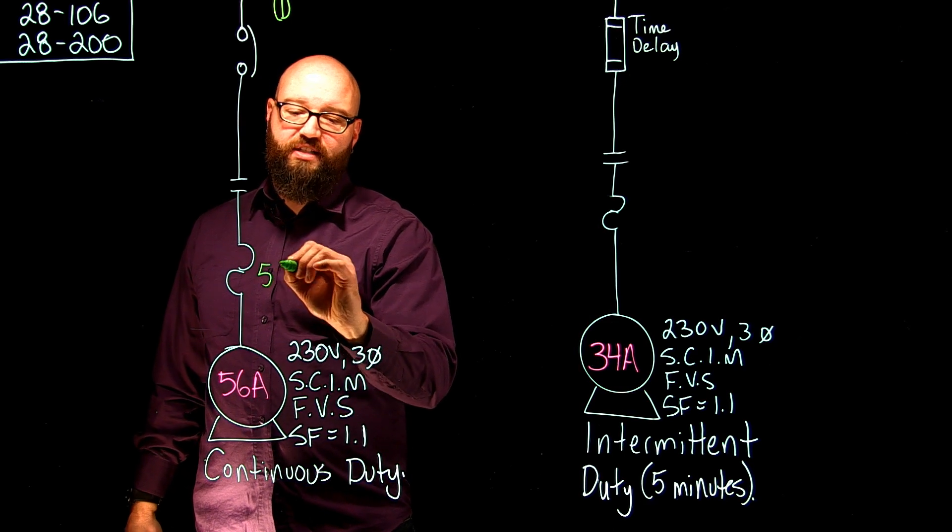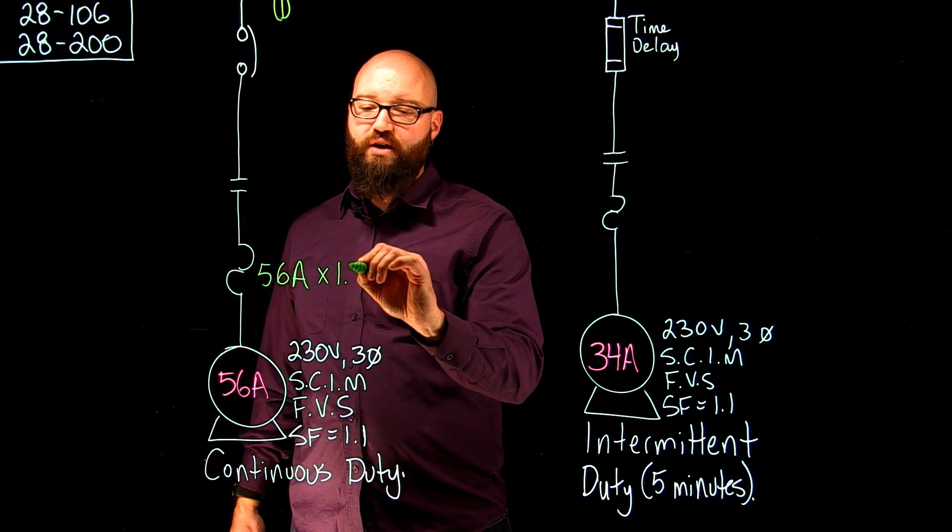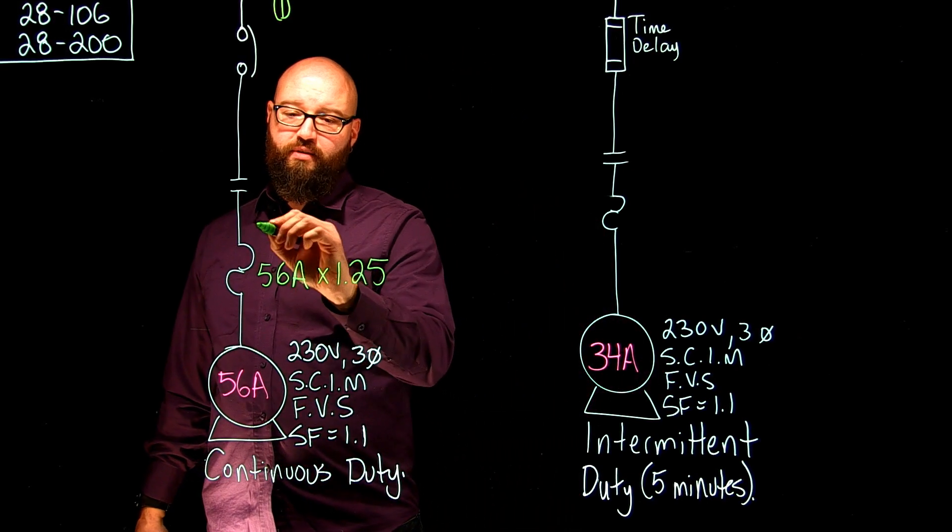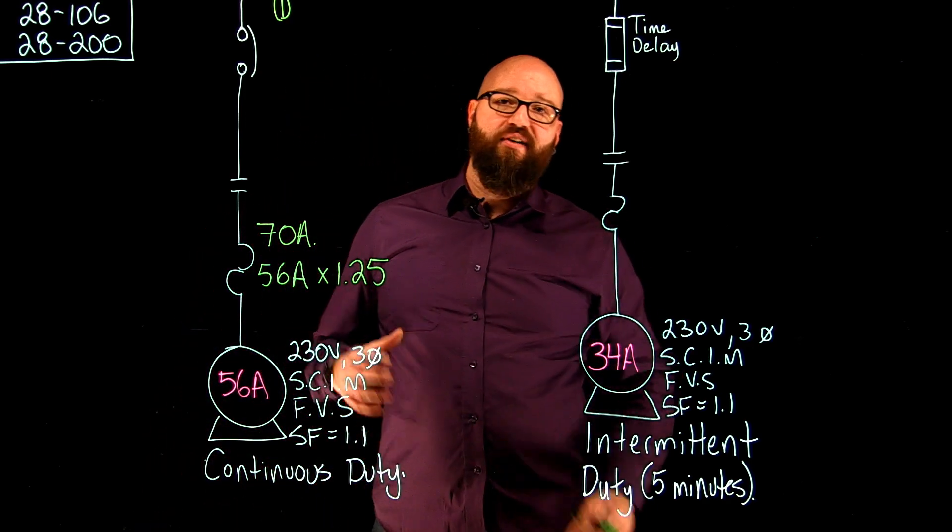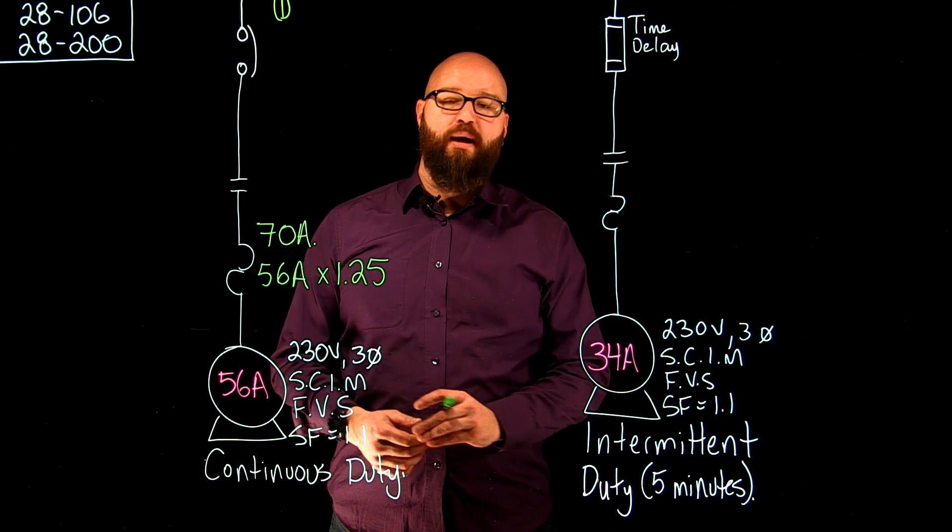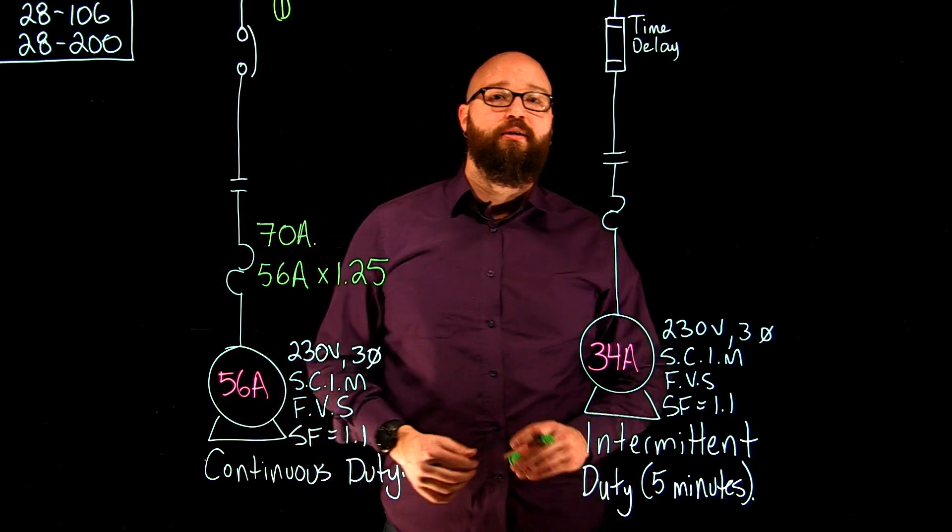So let's find out what 125% of FLA is first. We're going to take our 56 amps and multiply it by 1.25, which gives us a minimum ampacity of 70 amps. What that means is I have to have a conductor that has at least an ampacity of 70 amps in order to handle 125% of my FLA.